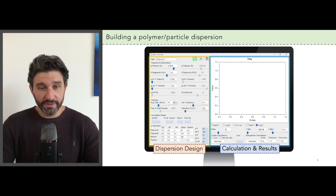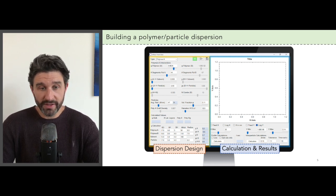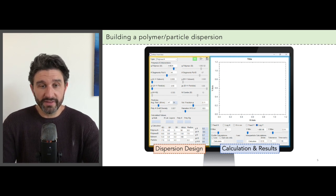On the left hand side you can see all of the input parameters for the dispersion, for example the polymer and the polymer properties as well as the polymer interactions with other entities in the system.